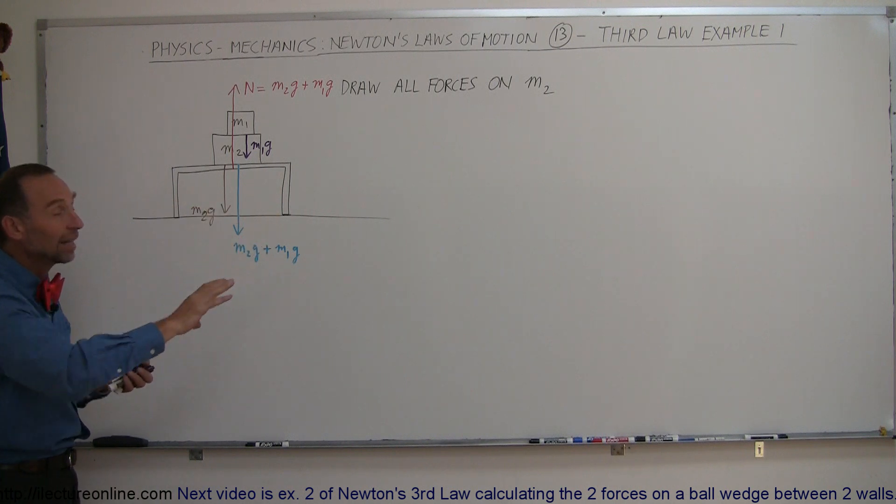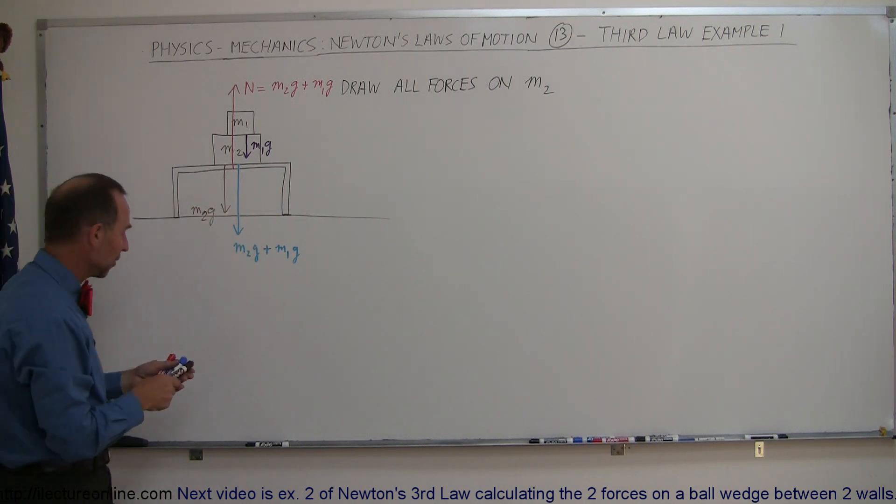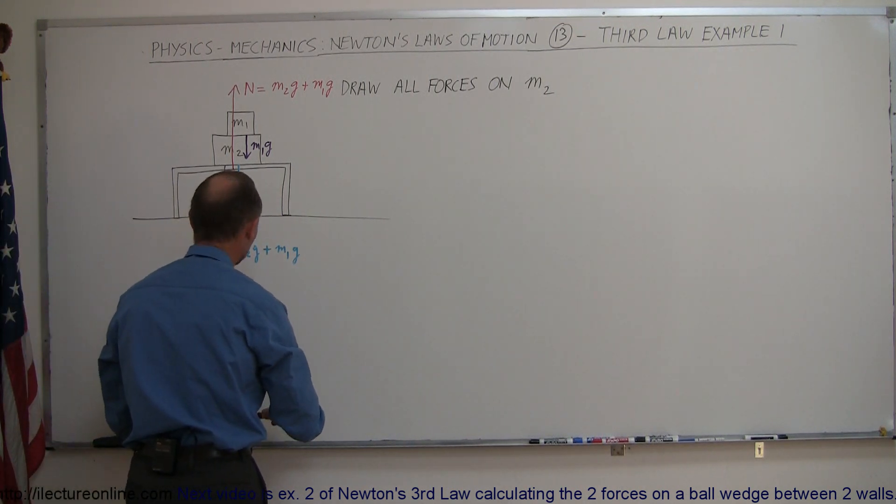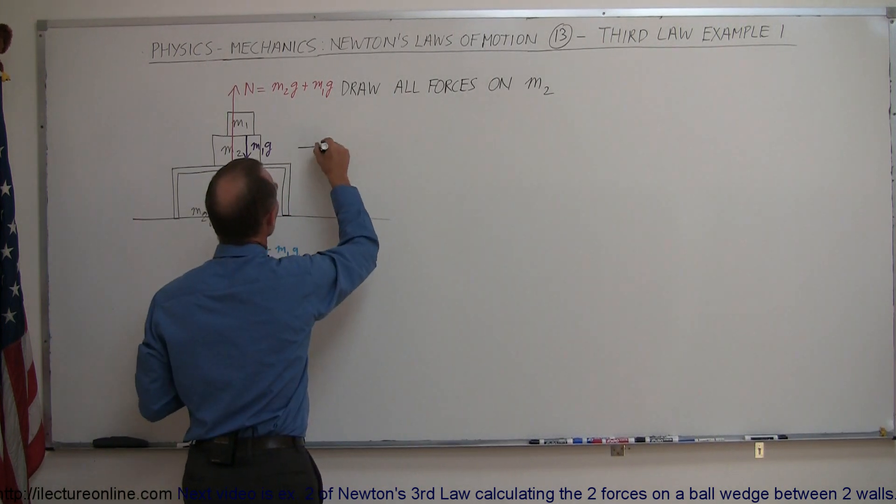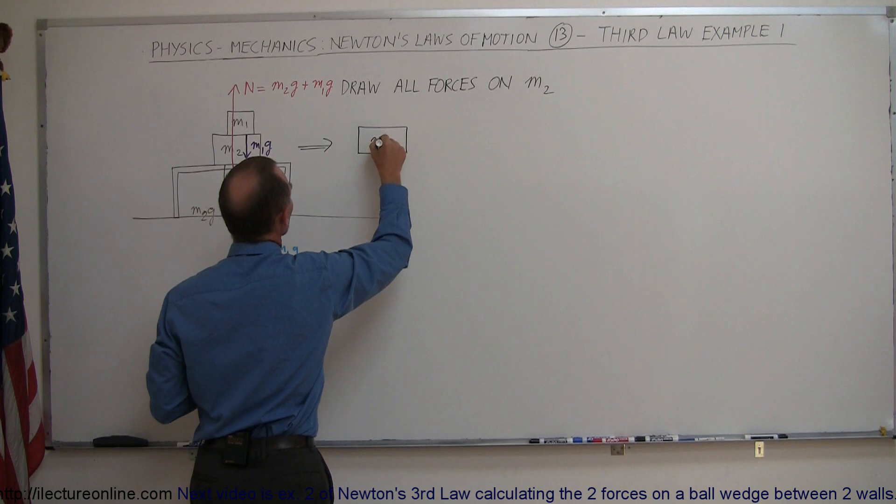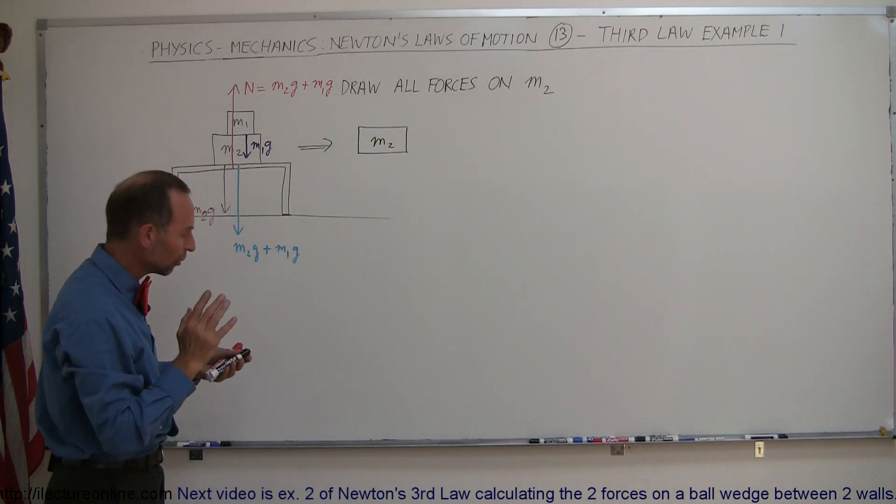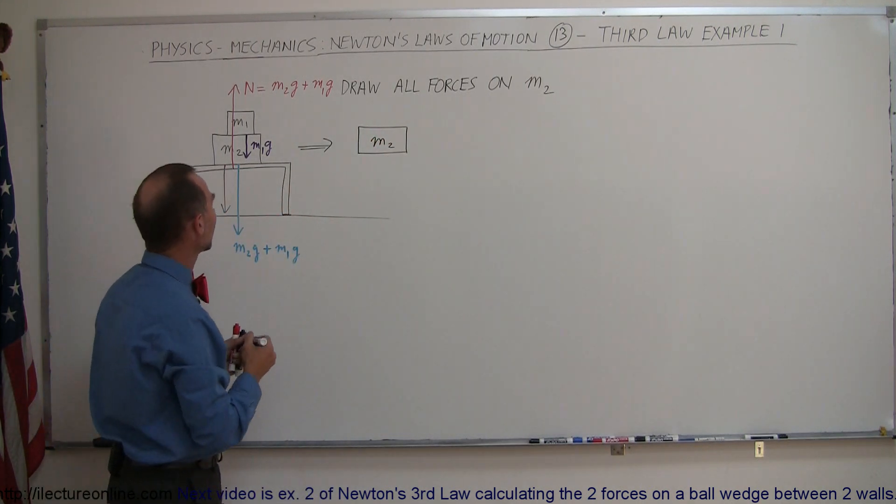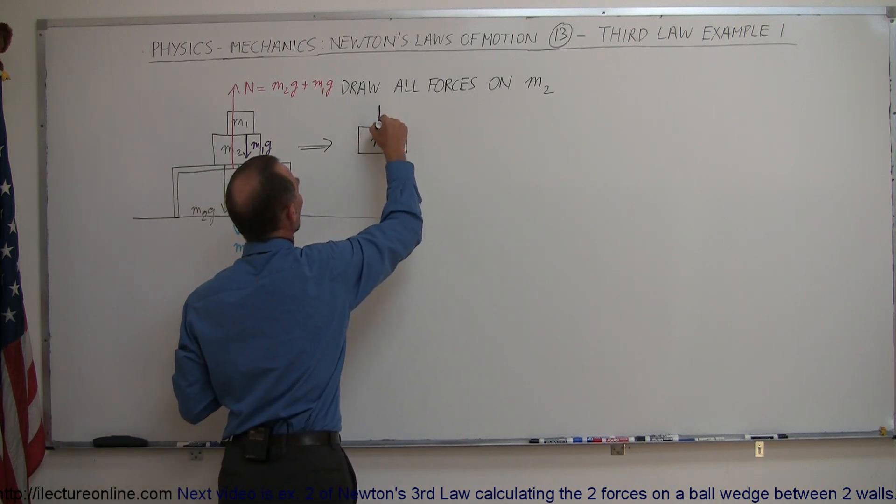Now that we understand that, let's take m2 and pull it to the side and draw a free body diagram of m2 alone to see what we get. So we're going to go ahead and pull this to the side, so here's m2, and now let's go ahead and draw all the forces acting on it.